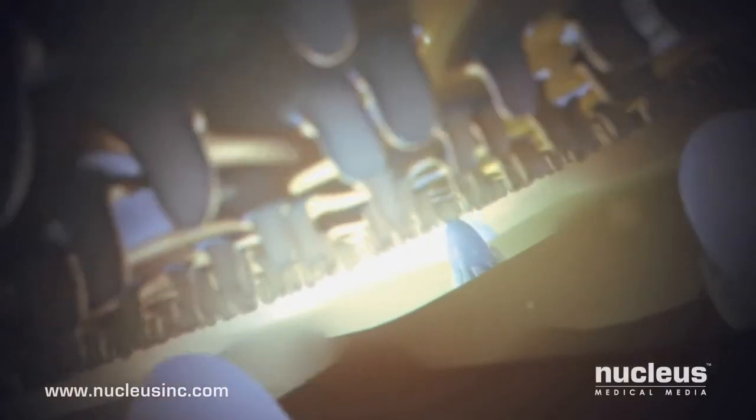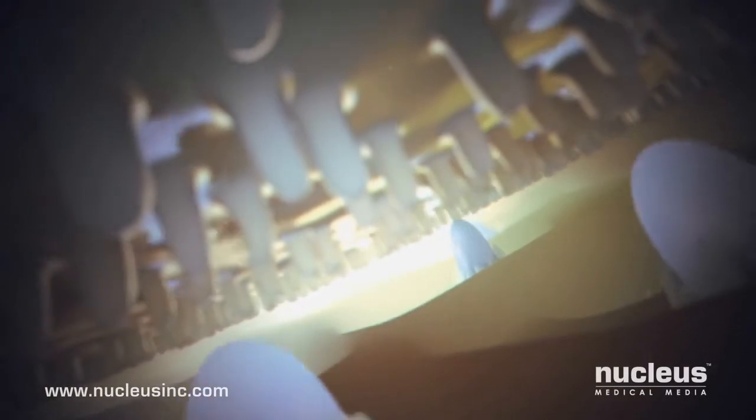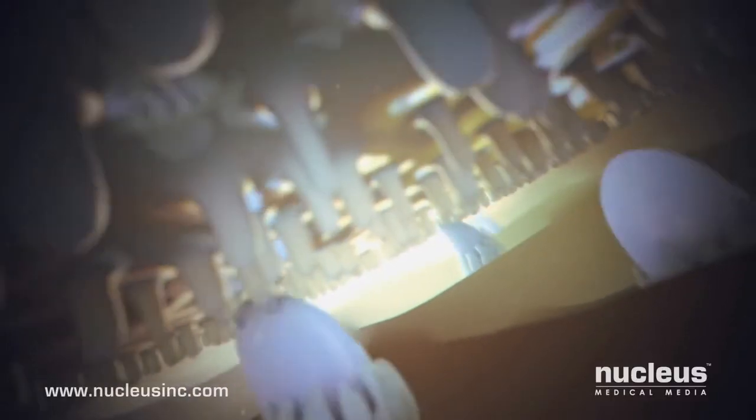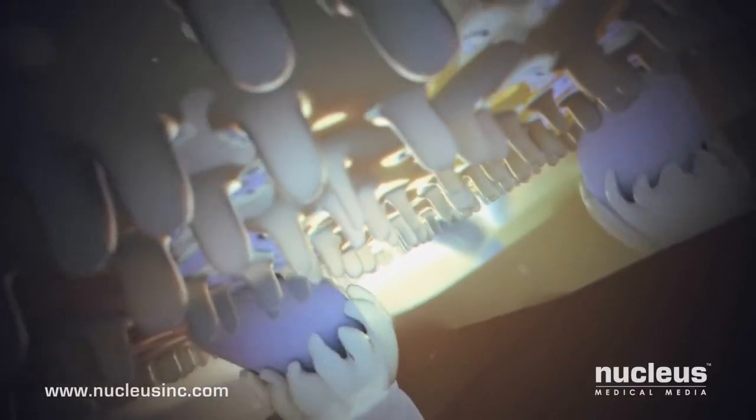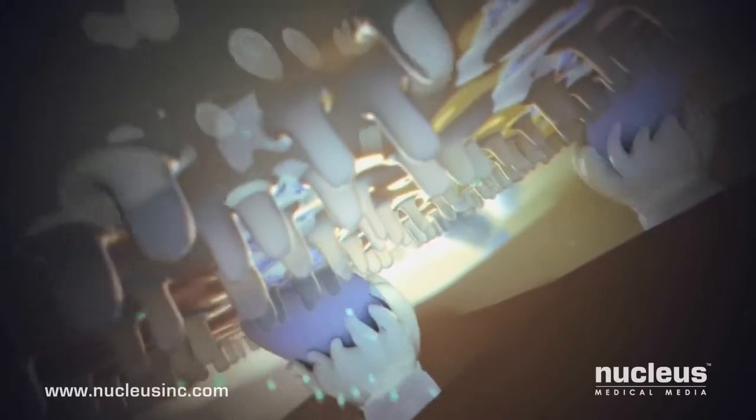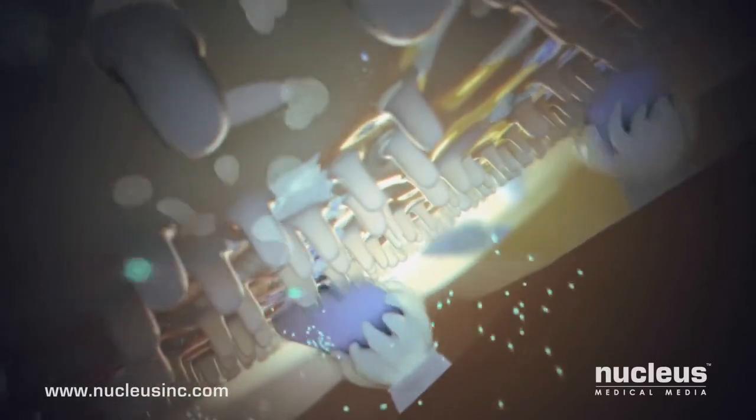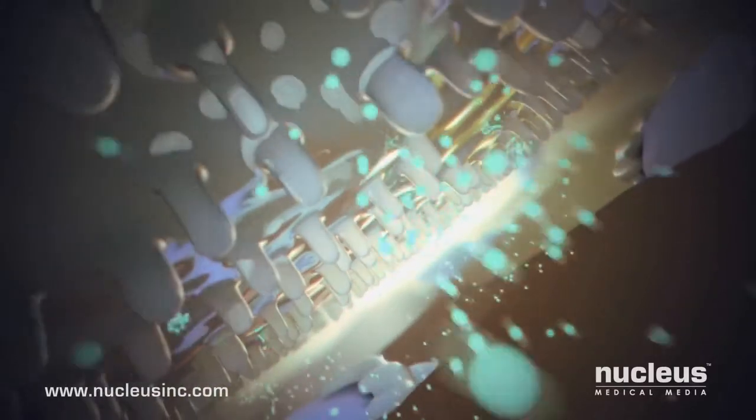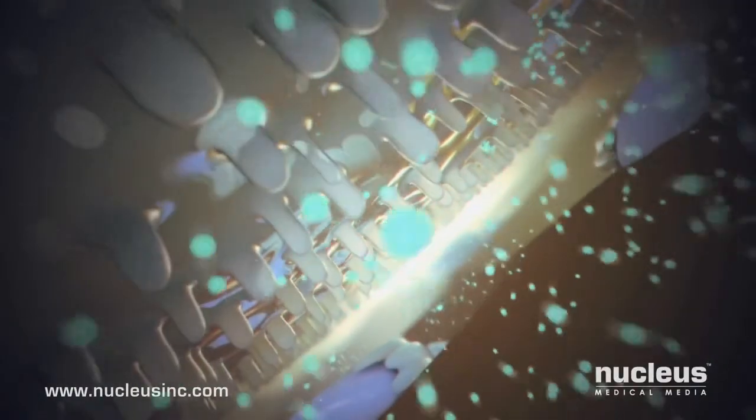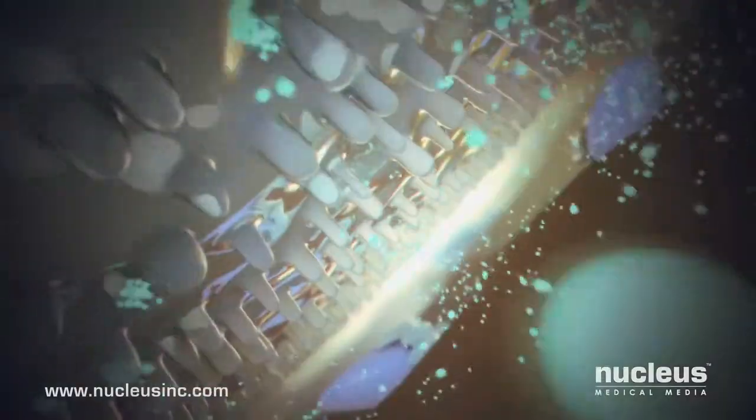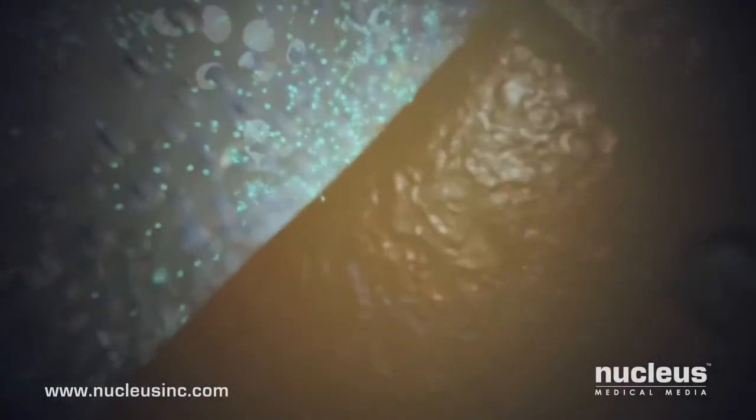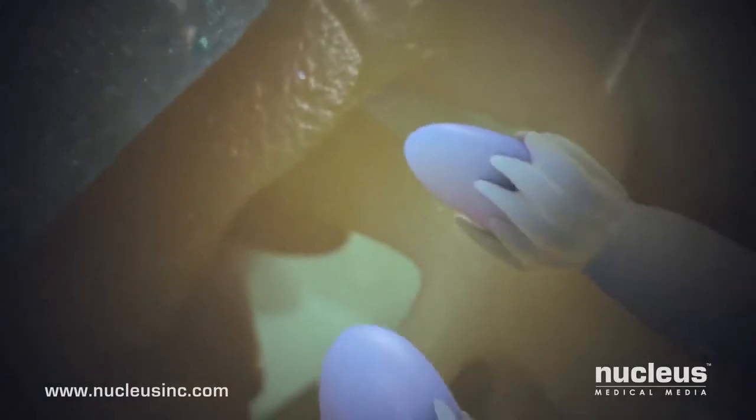This event causes changes in the egg membrane that prevent other sperm from attaching to it. Next, the egg releases chemicals that push other sperm away from the egg and create an impenetrable fertilization membrane. As the reaction spreads outward, the zona pellucida hardens, trapping any sperm unlucky enough to be caught inside.